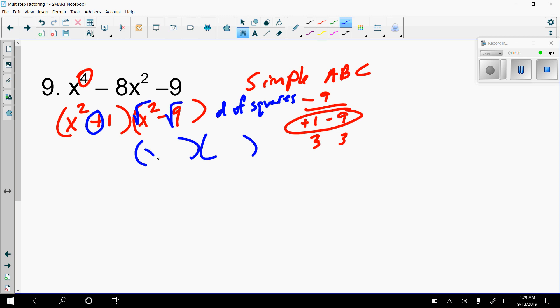We just square root this and square root this, so that's x and 3, x and 3. One's a plus, one's a minus, and then we just bring down the x squared plus 1.